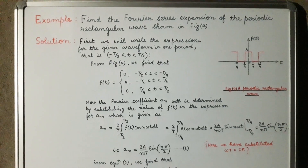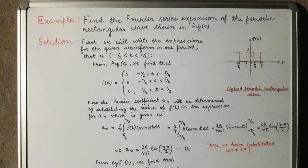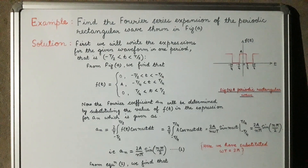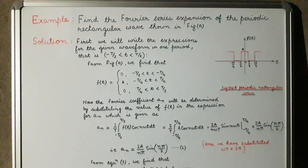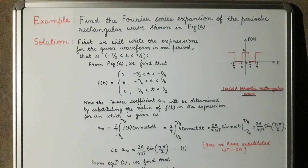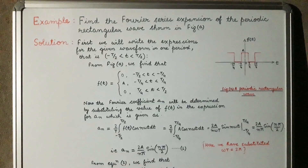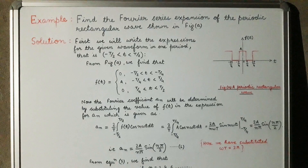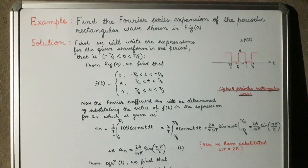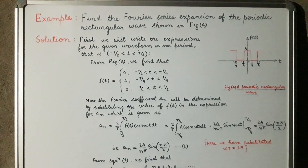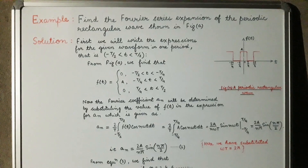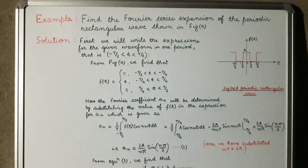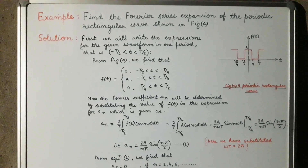We find the Fourier coefficients a₀/2, aₙ, and bₙ as per the formula for finding the Fourier coefficients. After finding them, we substitute the values of a₀/2, aₙ, and bₙ into the expression for the Fourier series expansion and thus arrive at the final result.